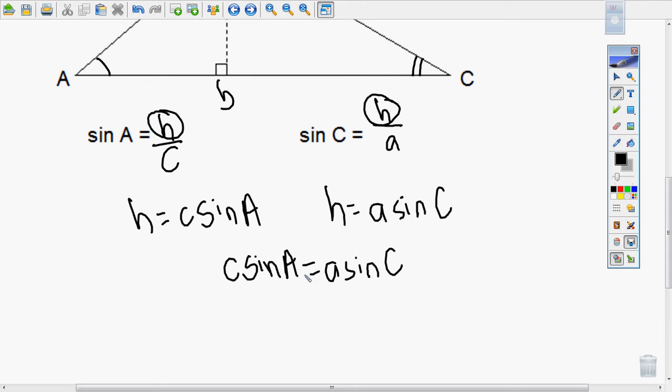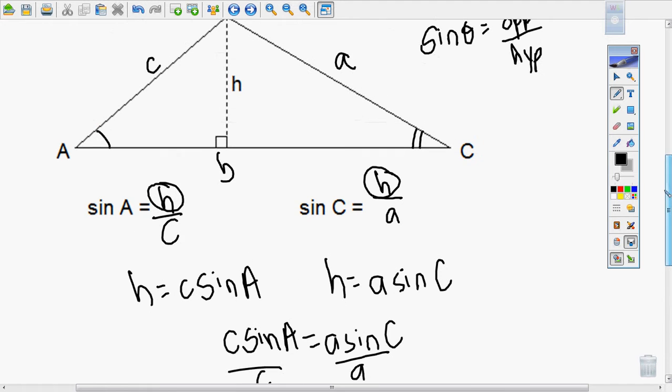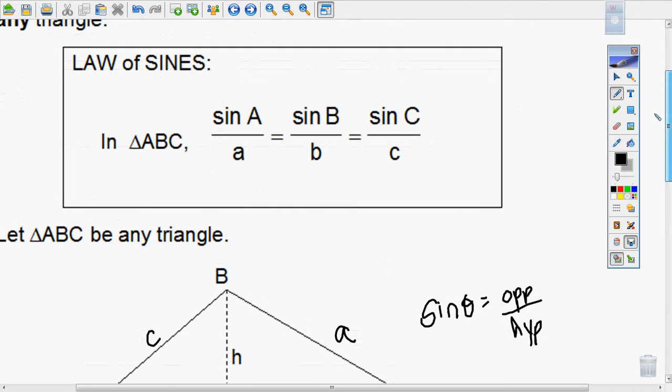If I wanted to get H by itself, I would multiply by C, and I get C sine of A. Same thing here, H would become A sine of C. If variables are equivalent, then I now know that C sine of A equals A sine of C. To get my corresponding angles and sides, I would divide this side by C, this side by A, and I end up with sine of A over A equals sine of C over C.